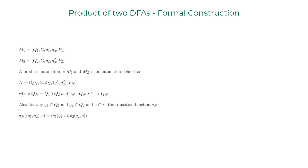Here I have machines m1 and m2 and their five-tuple descriptions. M1 and m2 are DFAs operating on the same alphabet sigma, but they have different sets of states Q1 and Q2, different transition functions delta1 and delta2, different start states q naught 1 and q naught 2, and different sets of final states F1 and F2.